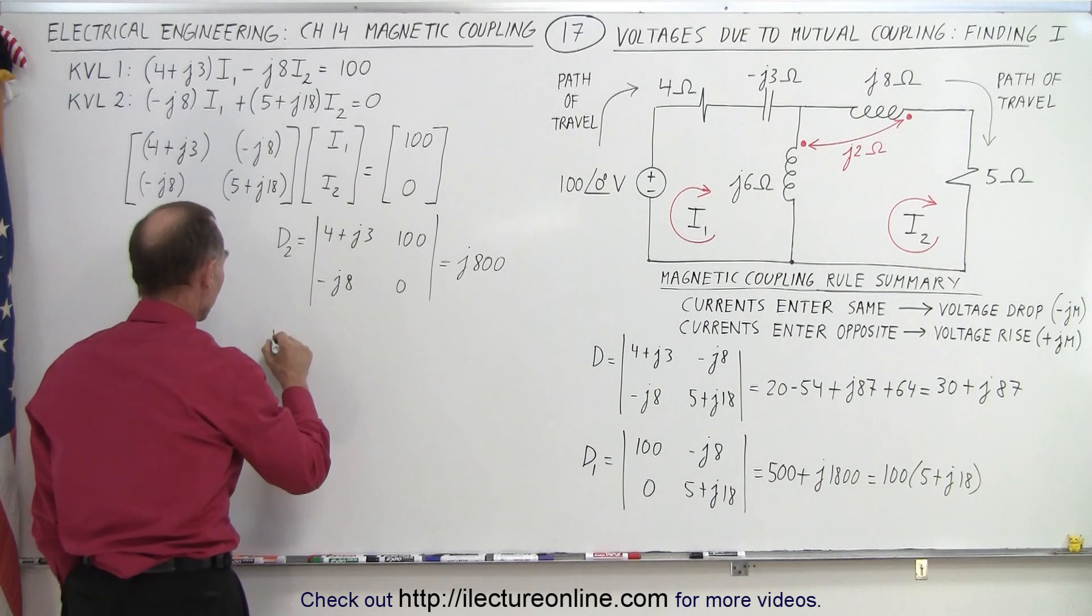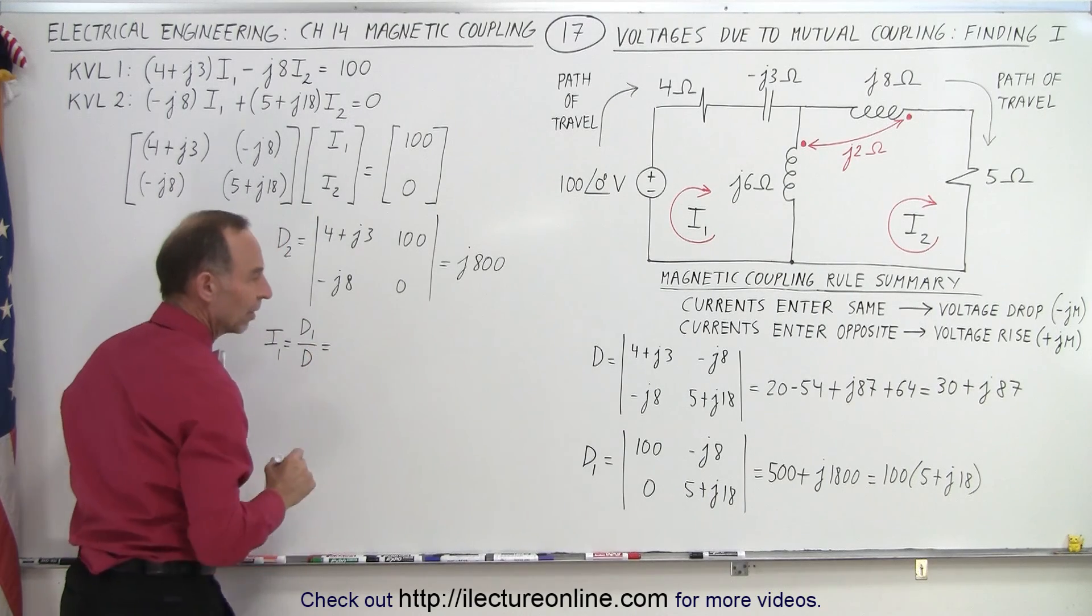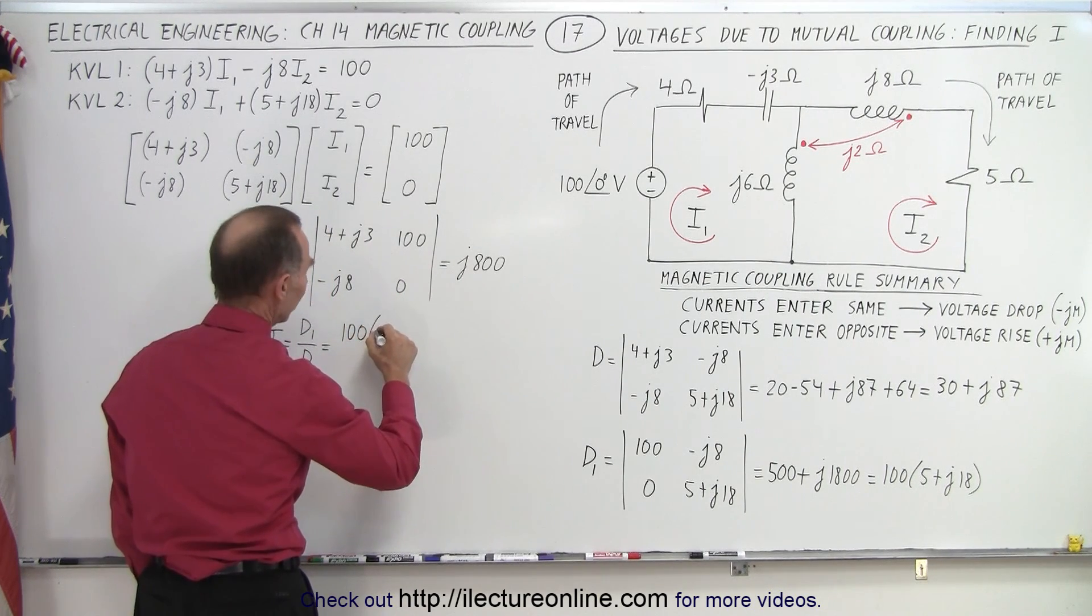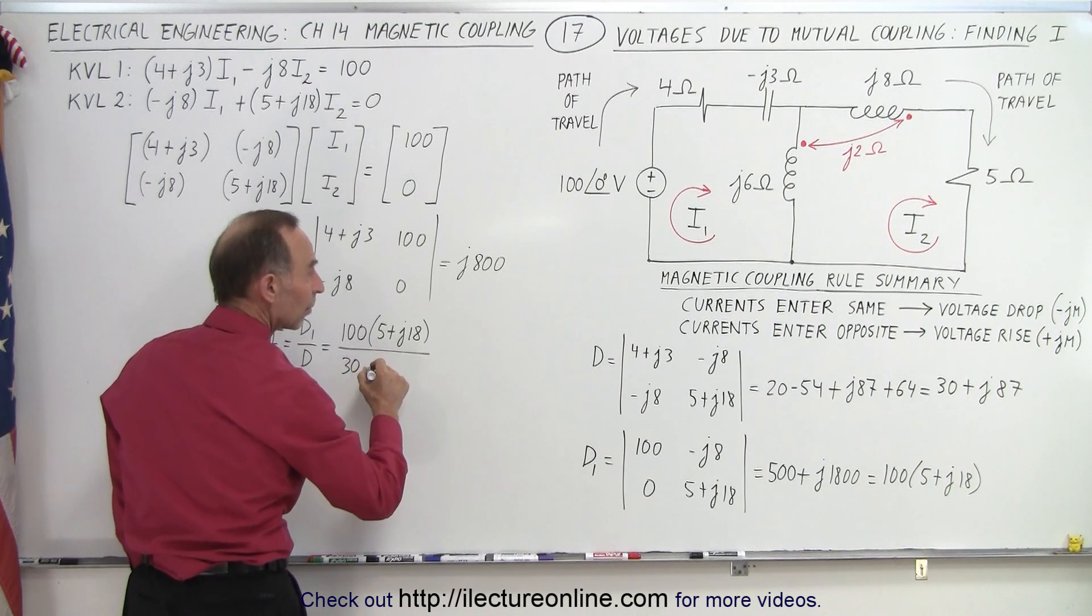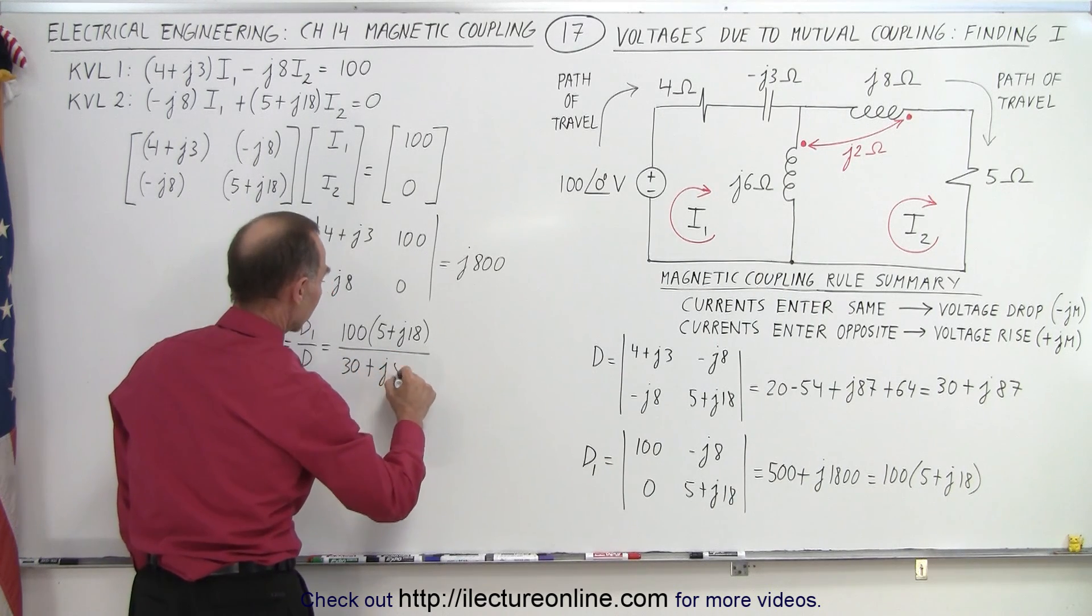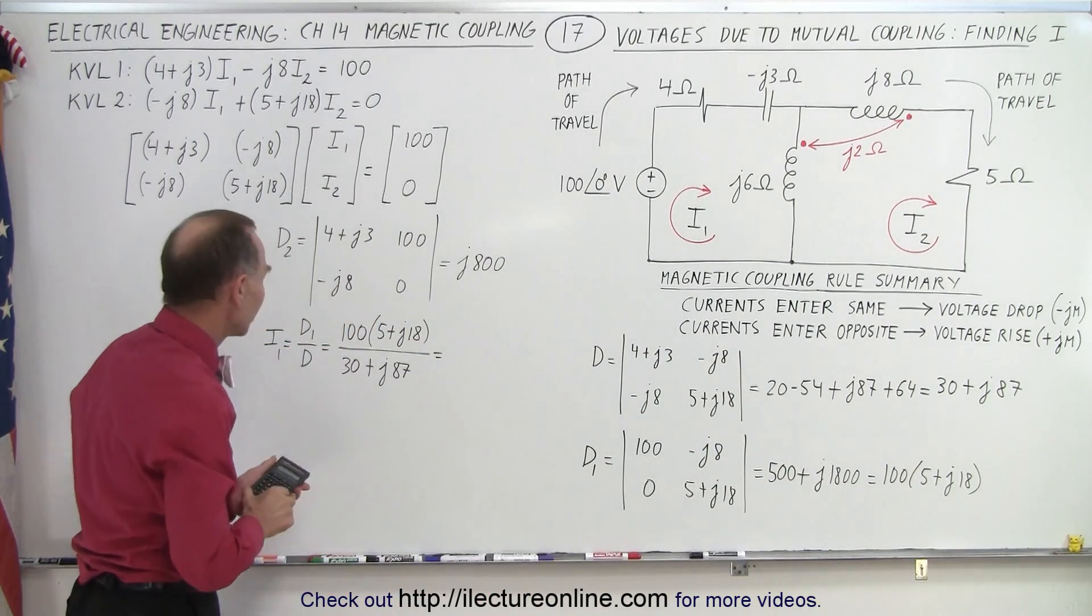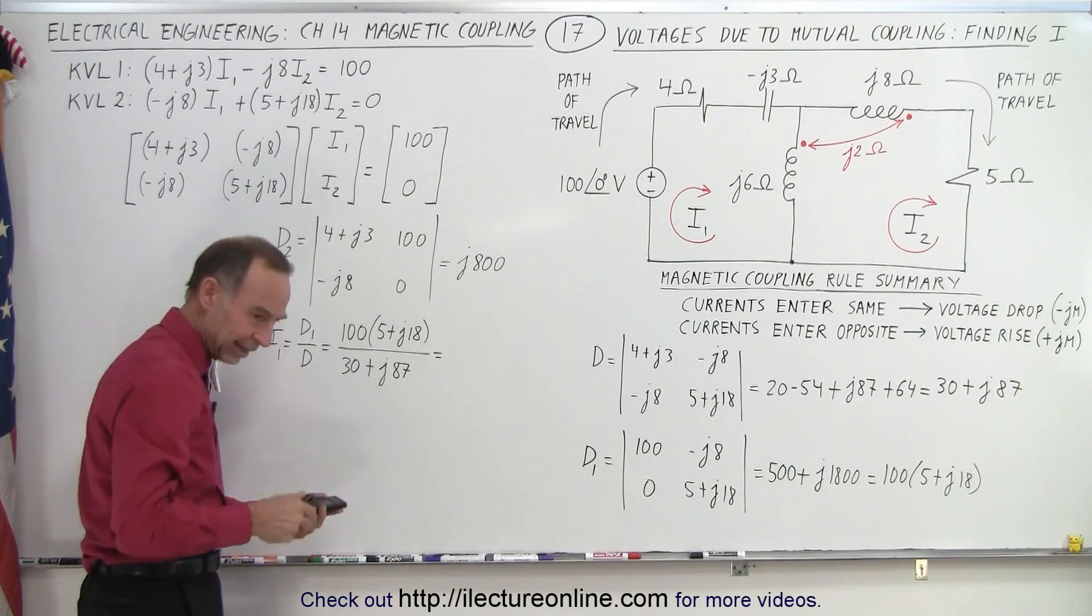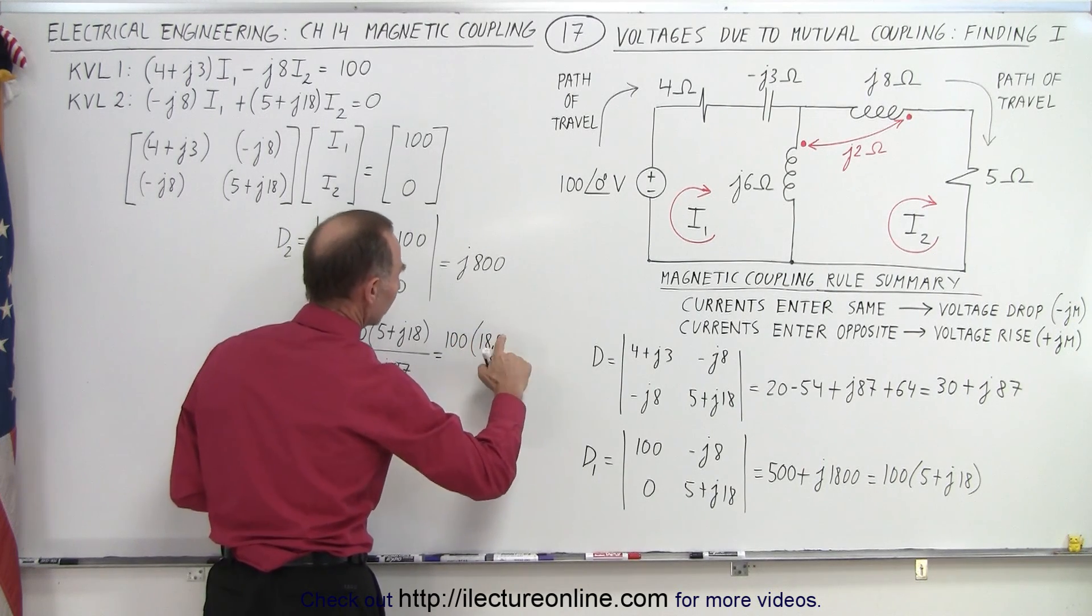Alright. So now it's fairly easy to find the two currents. I1 is equal to D1 over D. So in this case, D1 gives us 100 times 5 plus J18, and D is 30 plus J87. Now of course we want to convert to magnitude and phase format. That makes it easier. So that becomes 25 plus 18 squared, take the square root, that gives me 18.68. So that would be 100 times 18.68.